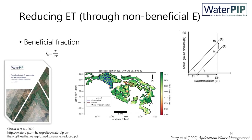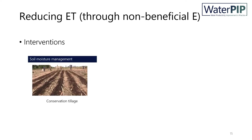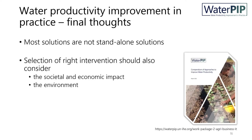On the other side of the equation is the reduction of water consumption. Since we are dealing with evapotranspiration, of which only transpiration contributes to photosynthesis and biomass production, the focus is on increasing the so-called beneficial fraction, defined as transpiration over total evaporation. An example of the spatial variation of the beneficial fraction for the Sinavane estate in Mozambique is provided here. Typical interventions for reducing non-beneficial evaporation include improving soil moisture management through mulching and conservation tillage. A detailed overview of different interventions and how they improve water productivity can be found in the compendium of approaches available on the WaterPIP project website.